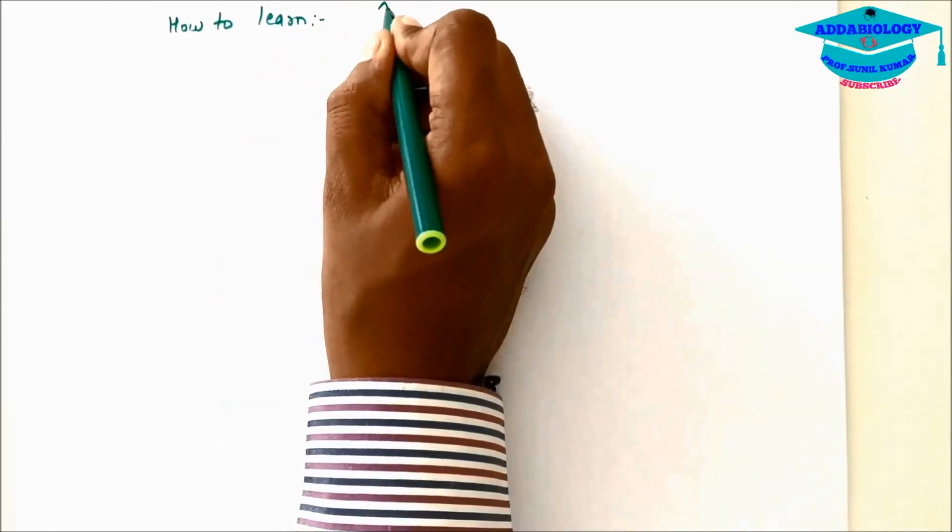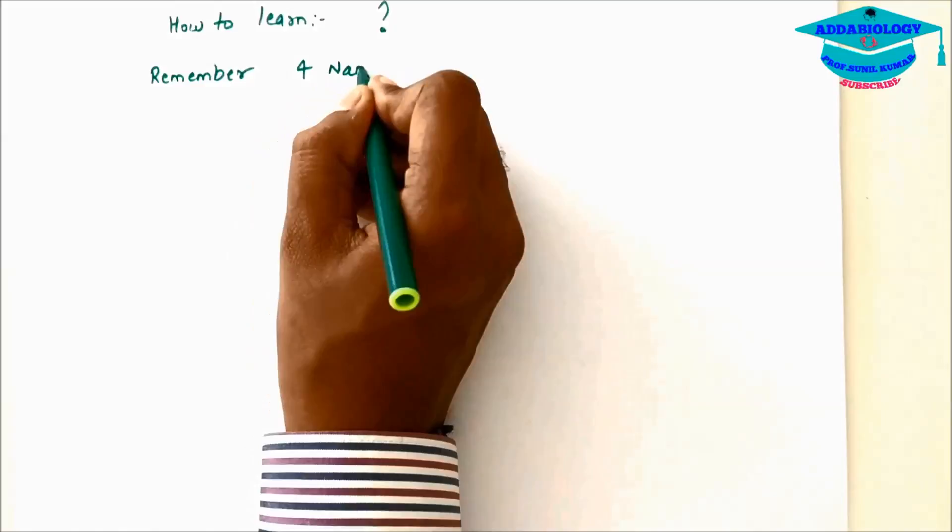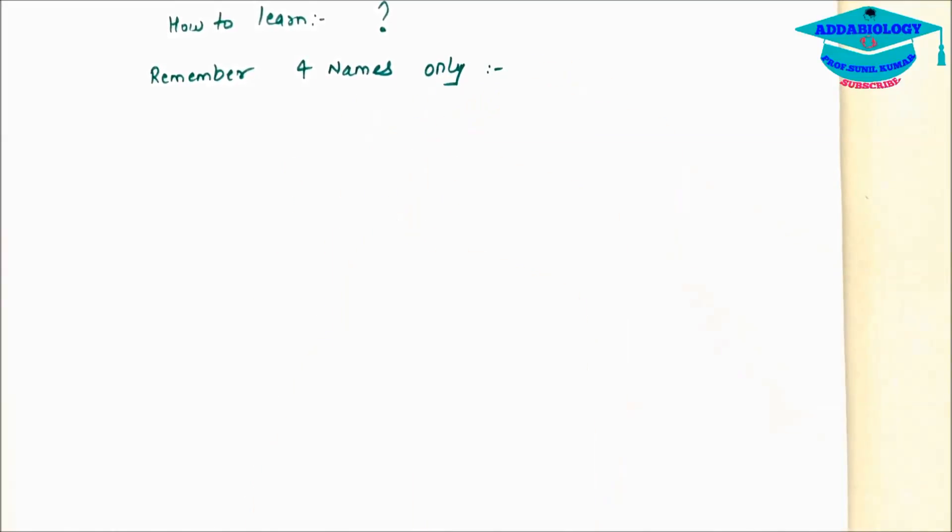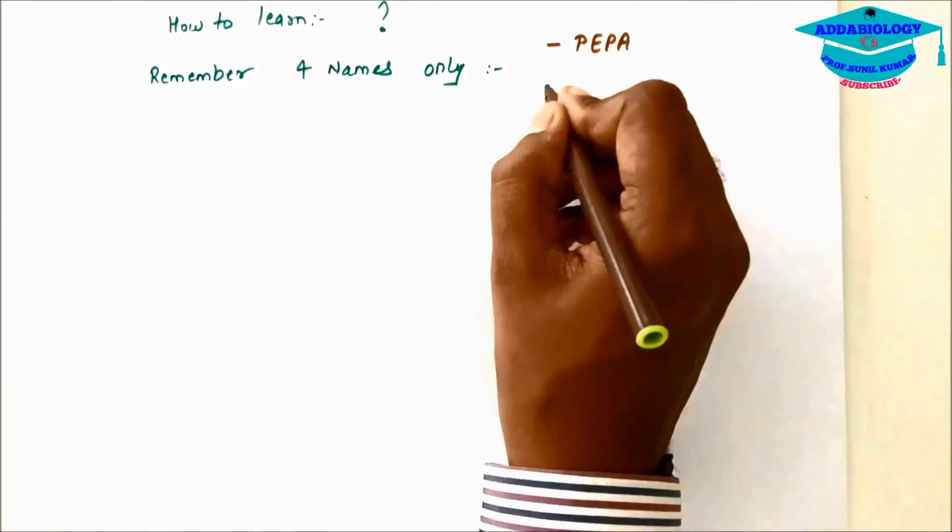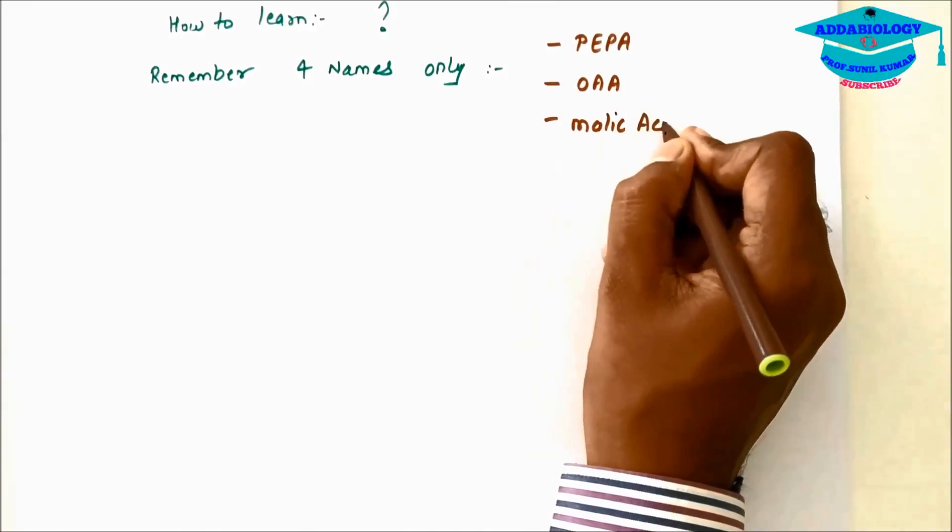How to learn? Just remember 4 names only. First is PEPA, OAA, malic acid, Mali and Pa. It is PEPA, OAA, MAPA.